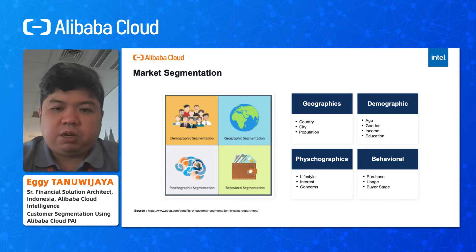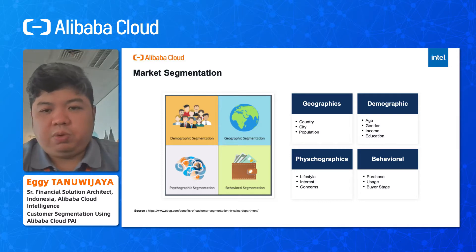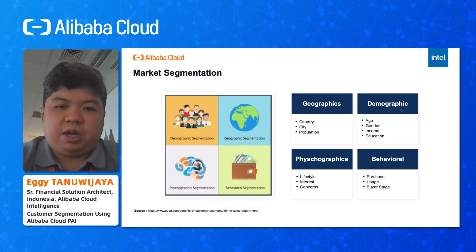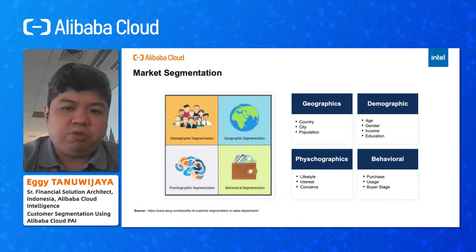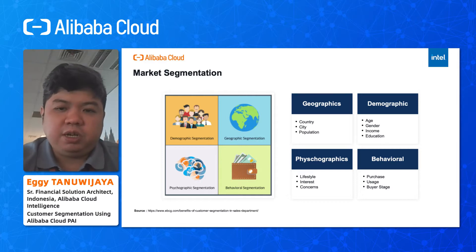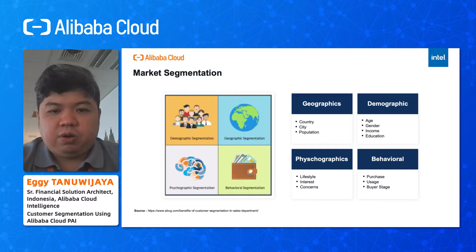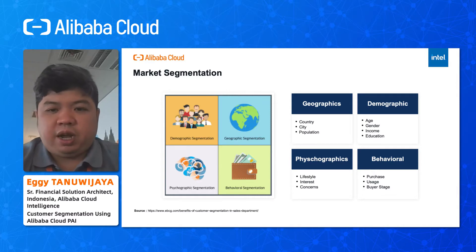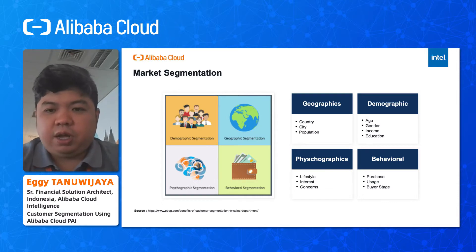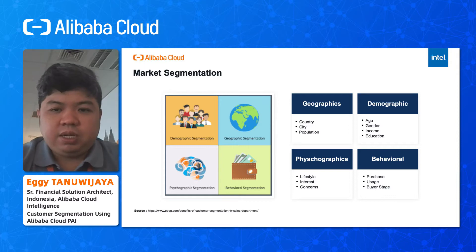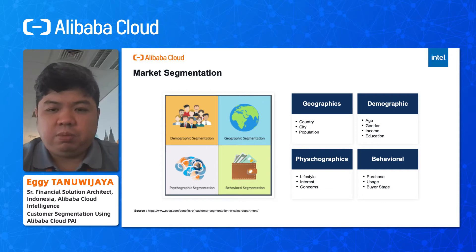Related to market segmentation itself, it is divided into four areas mostly. We can look at it from the geographic perspective — like which country or city you want to target, and the population size. For example, if I live in Jakarta and I target young people who have a lifestyle of going to coffee shops, I can target a specific age range, maybe from 17 to 25.